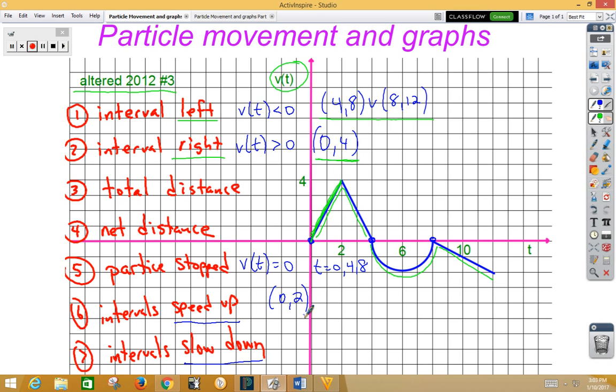From 2 to 4, the slope is negative, but the velocity is still positive. Since those two signs are different, we know from 2 to 4 the particle is slowing down.